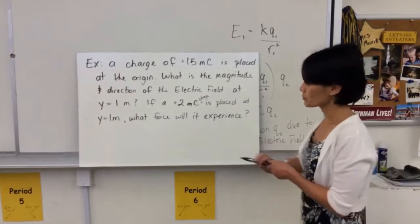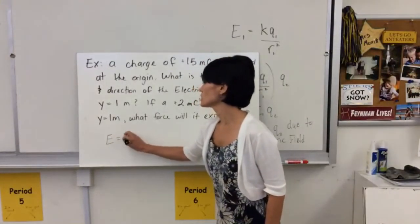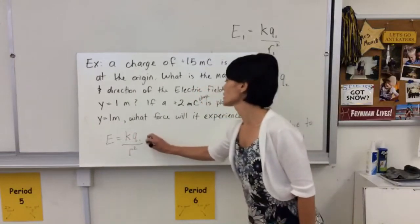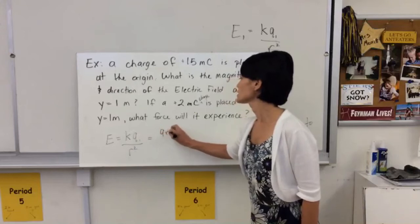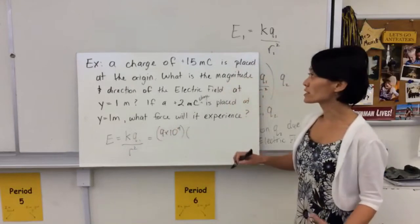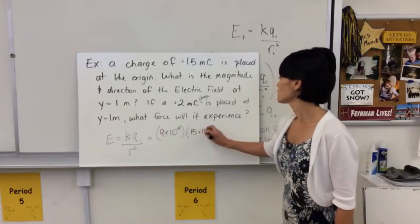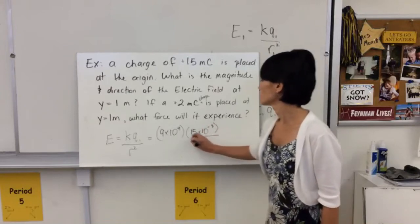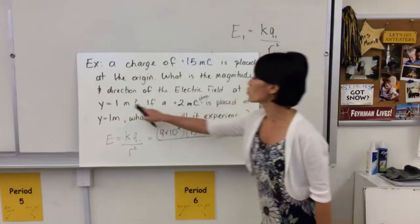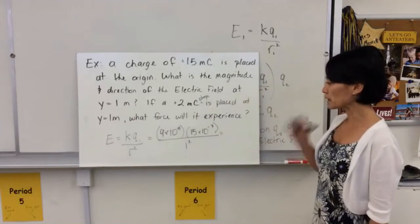So our equation just for an electric field of a charge is kq1 over r squared. So this is going to be k is 9 times 10 to the 9. My charge, it's the electric field of my 15 millicoulombs. So 15 times 10 to the negative 3 divided by my distance is 1 meter, so divided by 1 squared. So I'll give you a minute to calculate that out.